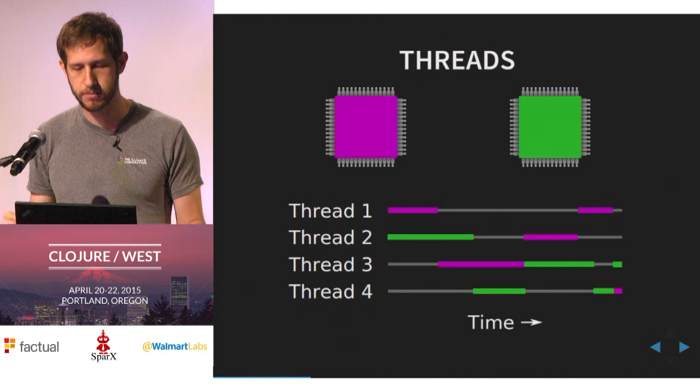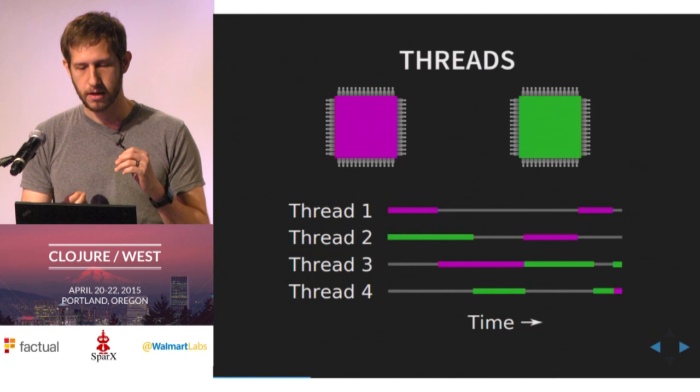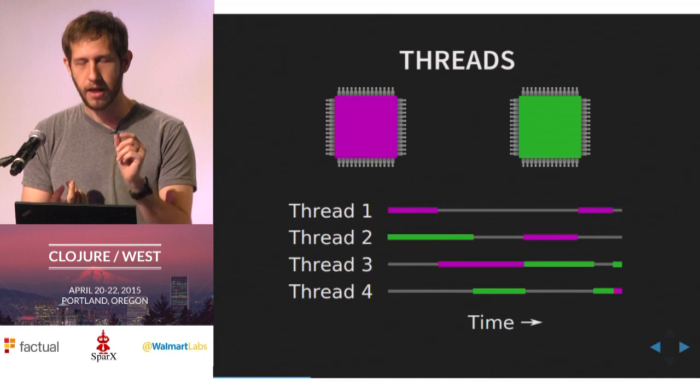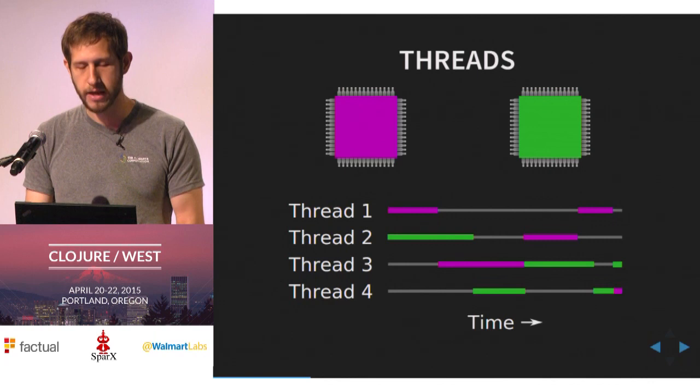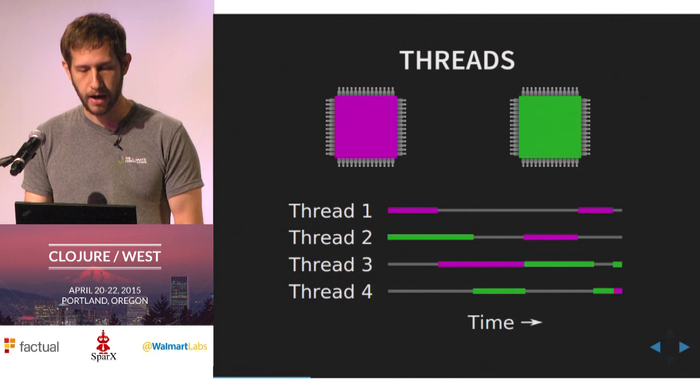Another reason threads might switch is they need the operating system to do work — something they can't do themselves. For instance, if they're reading from a disk or writing to a network interface, they don't have direct access to that. They make an operating system call, and the OS says you can't do anything now — I'll get back to you when I'm finished.